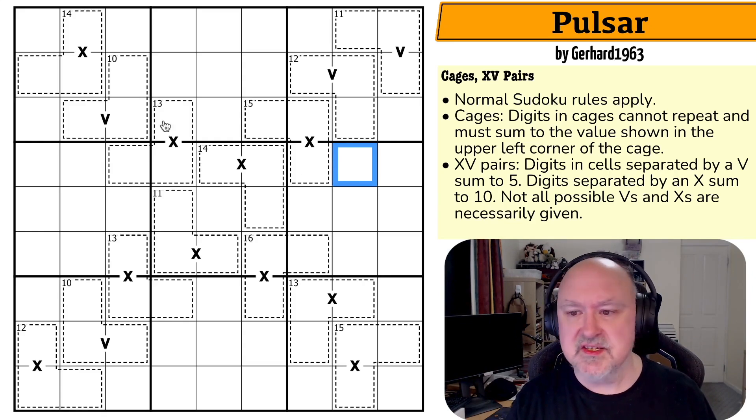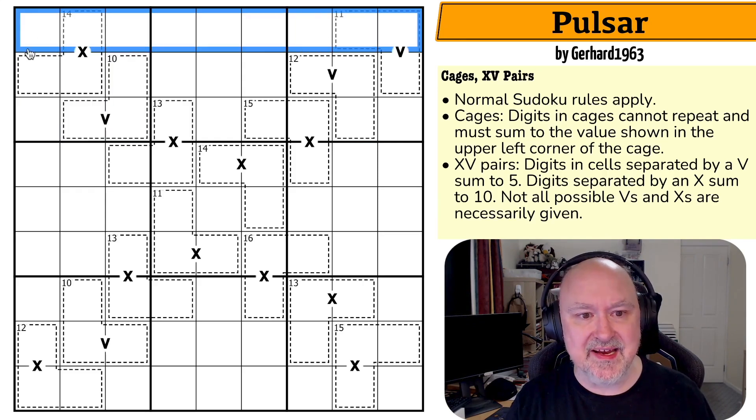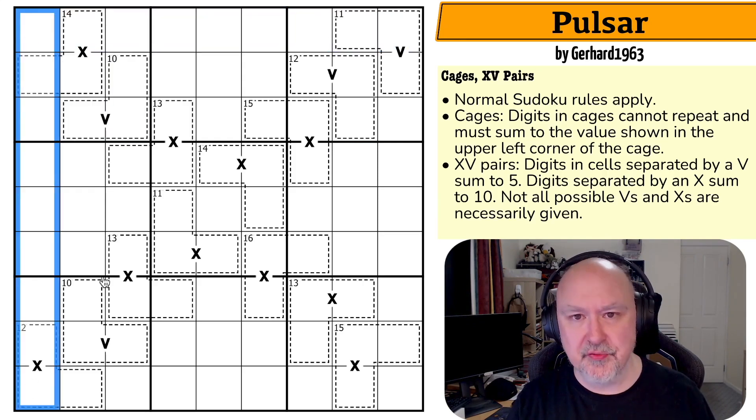Let's have a look at the rules. We've got normal Sudoku rules apply. So in every box, in every row and in every column we need to put the digits one through nine without repetition.